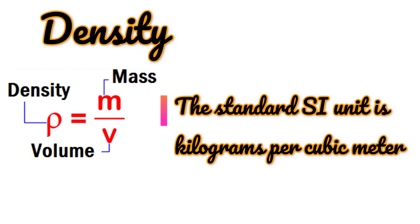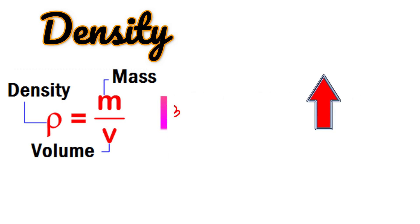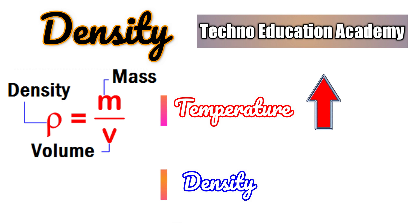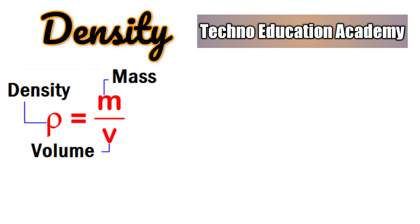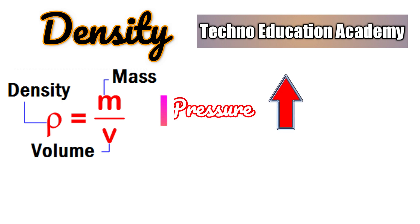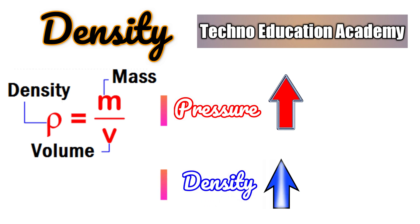The unit of density in SI unit is kilogram per cubic meter (kg/m³). Regarding the effect of temperature on density: whenever we increase the temperature, the volume of fluid increases and hence mass density decreases. When pressure increases, volume decreases and hence mass density increases. So increasing temperature reduces density, while increasing pressure increases density.